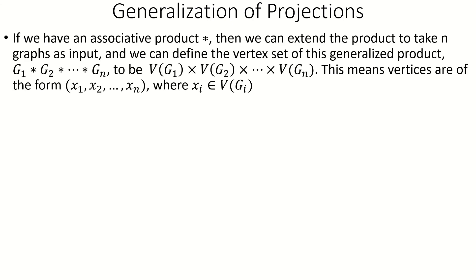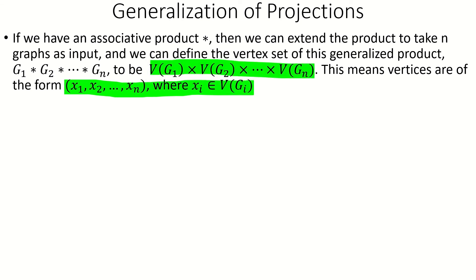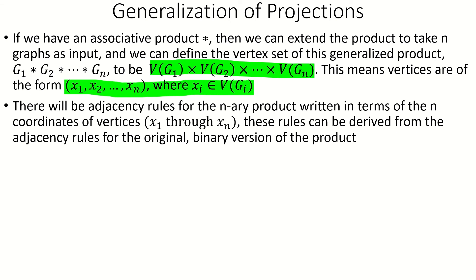Moving on, for associative graph products, the concepts of projection and layers generalize nicely for products of more than just two graphs. If we have an associative product, then regardless of how we group our operations, the resulting graphs are all isomorphic — they'll just have different vertex labelings. This allows us to extend the product to take an ordered list of n graphs as input. To make this n-ary product well defined, we define the vertex set to be the set of all vertices of the form x sub 1, x sub 2, and so on up to x sub n, where x sub i is a vertex from graph g sub i — the Cartesian product of the vertex sets of the factor graphs. There will be adjacency rules involving the n coordinates that can be derived from the adjacency rules of the original binary product.